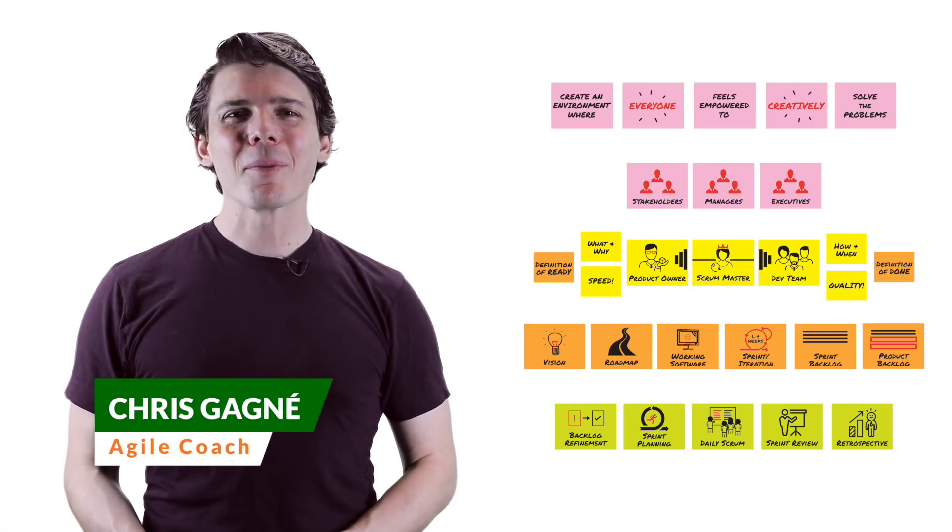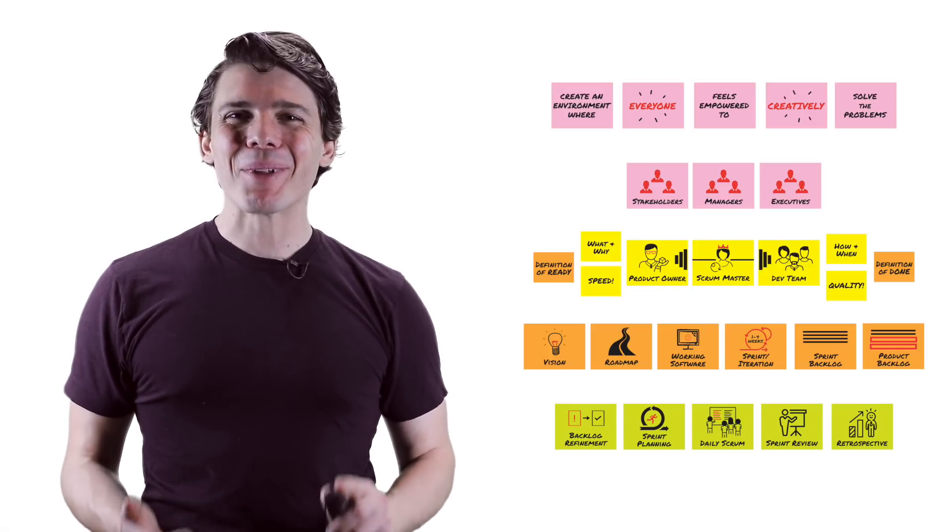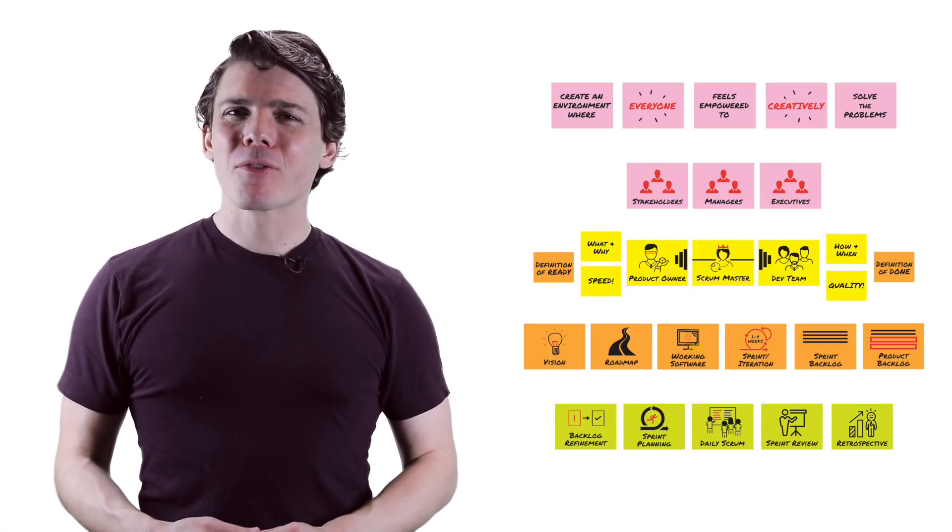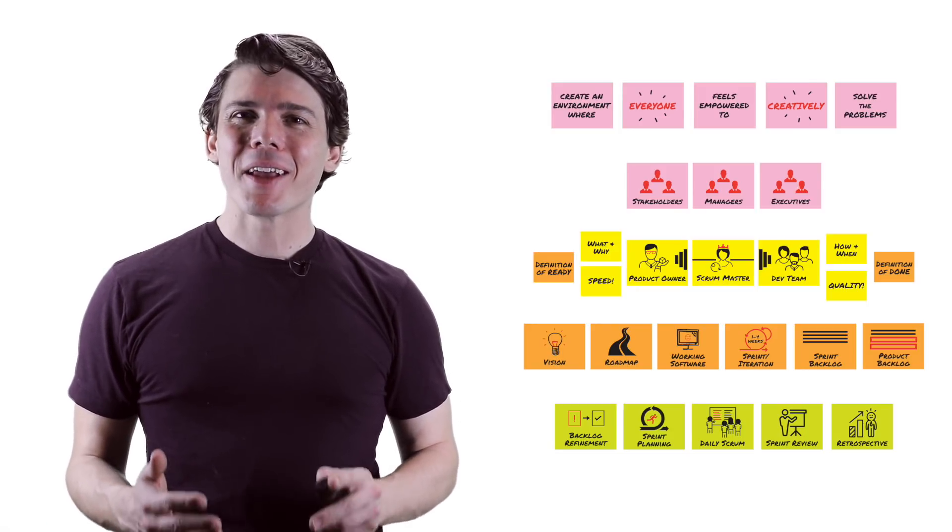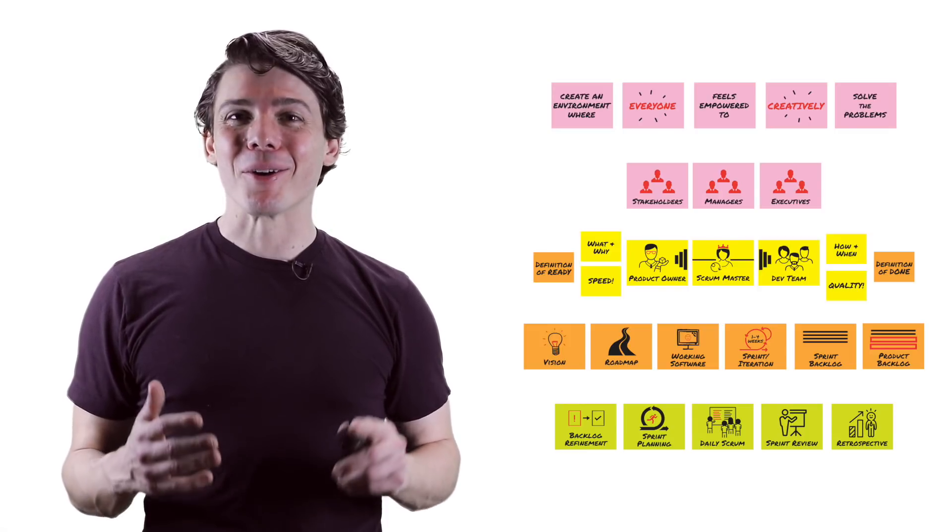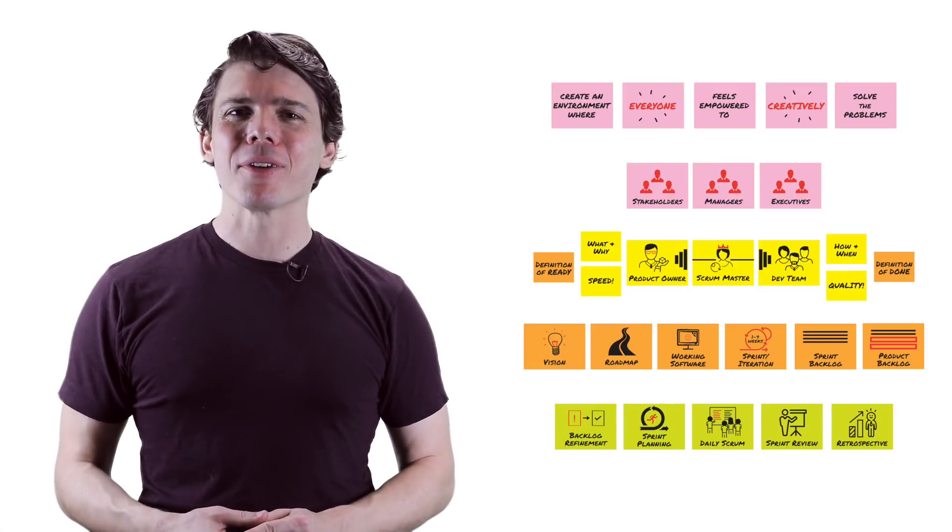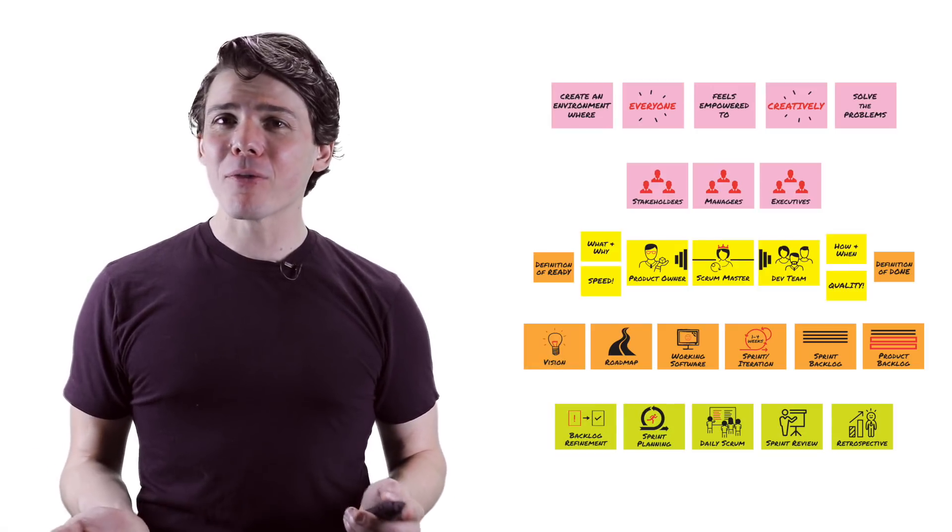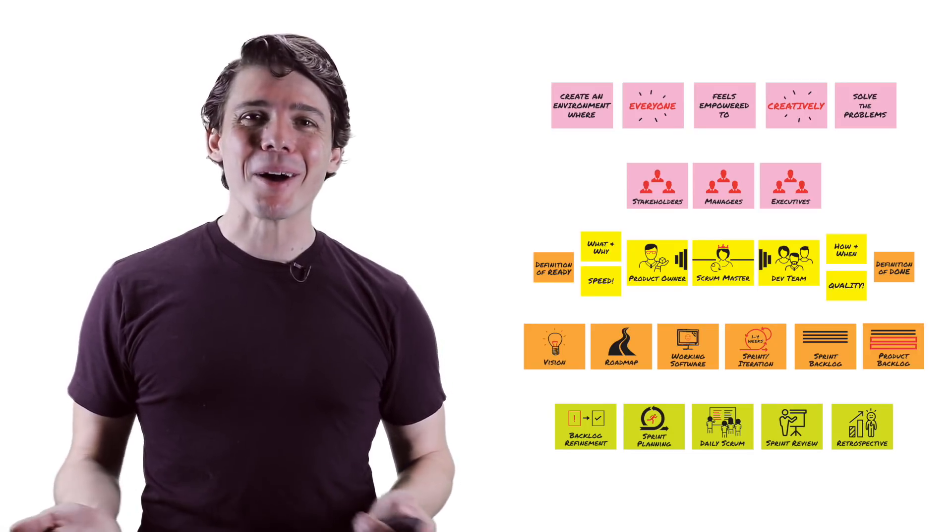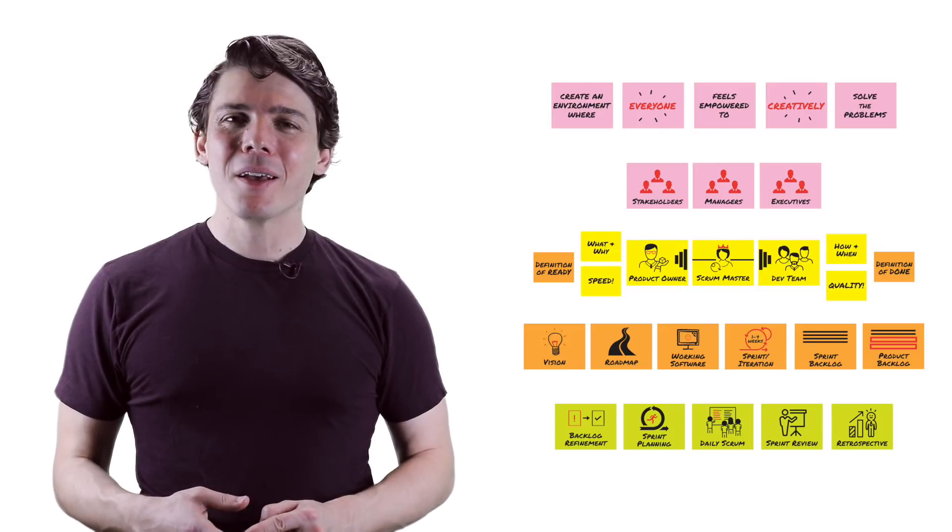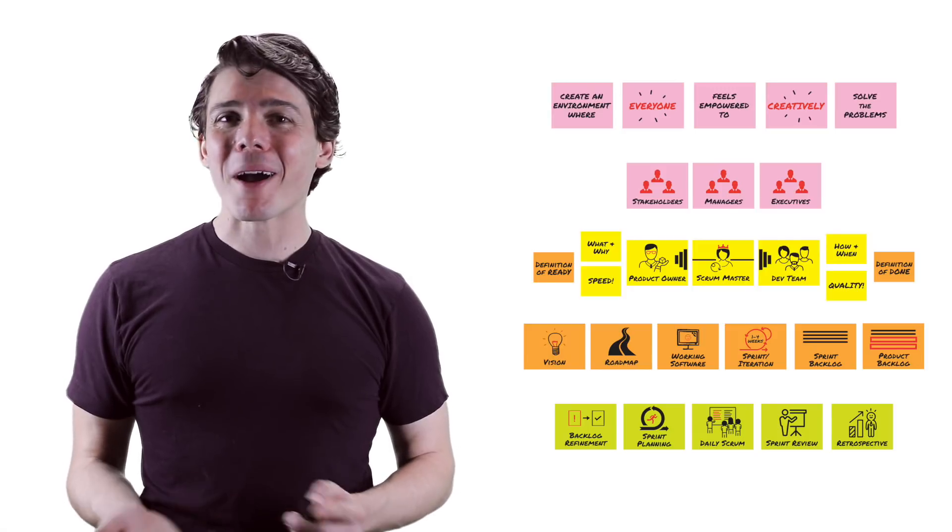According to the Scrum Guide, Scrum is a framework for developing, delivering, and sustaining complex products. Scrum is a collection of roles, events, artifacts, and rules that help teams work together more effectively and harmoniously. It's been in wide use for over 20 years in a variety of industries ranging from software development, where it is best known, to hardware development, marketing, and even nonprofits.